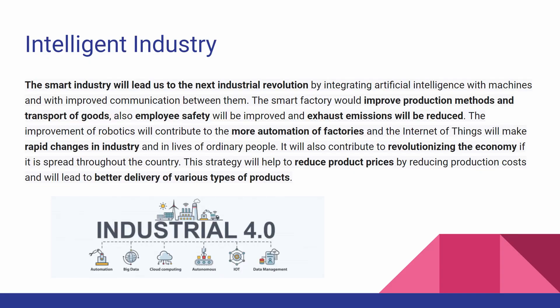The smart industry will lead us to the next industrial revolution by integrating artificial intelligence with machines and improving communication between them. The smart factory would improve production methods and transport of goods. Employee safety will also be improved and exhaust emissions will be reduced. The improvement of robotics will contribute to more automation of factories, and the Internet of Things will make rapid changes in industry and in the lives of ordinary people. It will also contribute to revolutionizing the economy, reducing product prices by lowering production costs and improving delivery of various types of products.